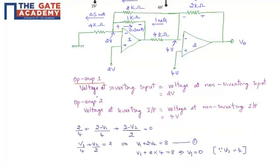In op-amp 1, the voltage at the inverting input is equal to the voltage at the non-inverting input, that is 2 volts. From op-amp 2, the voltage at the inverting input is equal to the voltage at the non-inverting input, that is 4 volts. The current values and directions are as shown: 1 milli-amp flows through op-amp 1 and 2 milli-amps flow through op-amp 2.